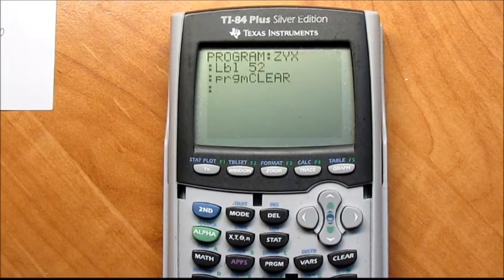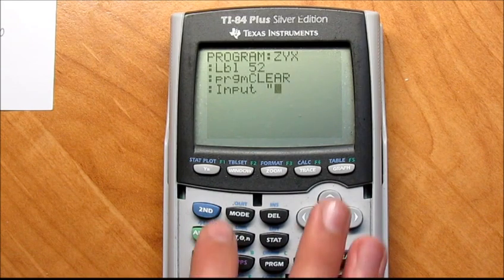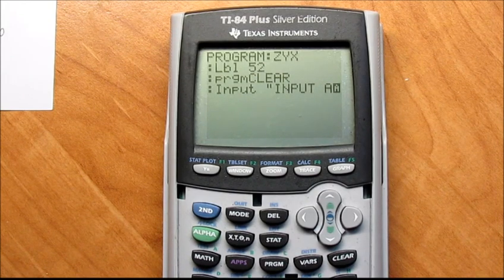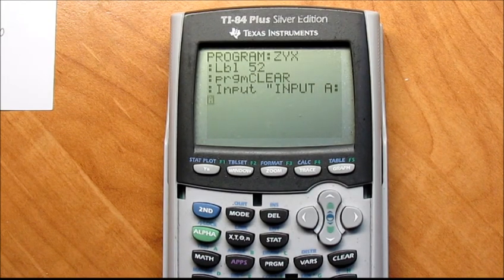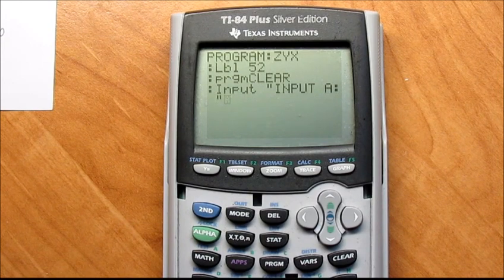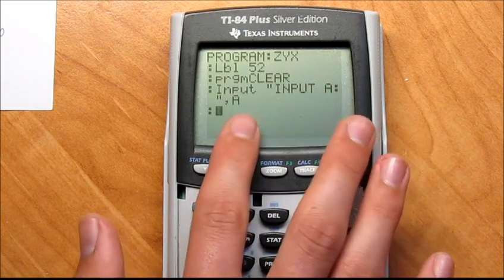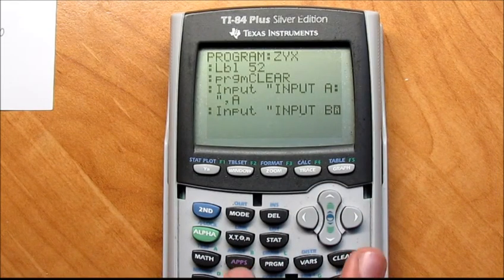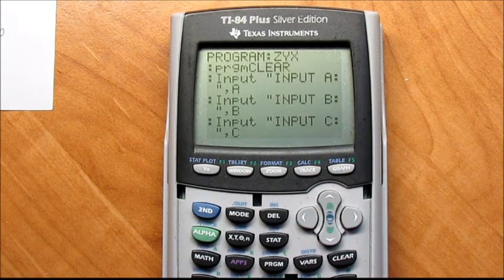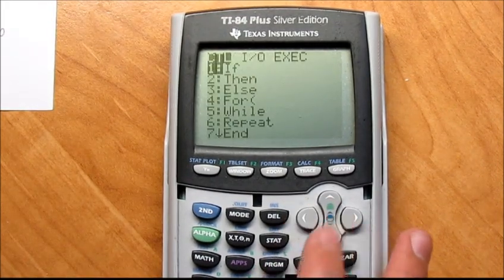All right, so for those of you that have it done, you scroll over to the right and select it from the list: program clear and hit enter. All right, now we're going to go program, input, alpha plus, second alpha, input A, and then the period down at the bottom there and then space, zero and then the plus sign again, and then hit alpha, and then comma A. And you're going to do the same thing except A is going to be B and then C.